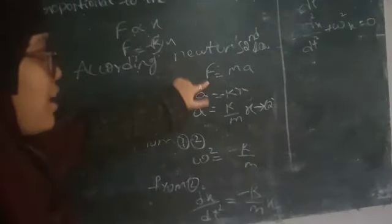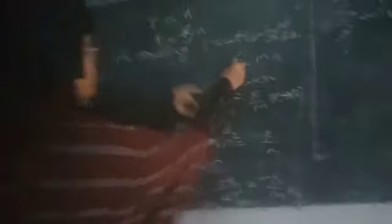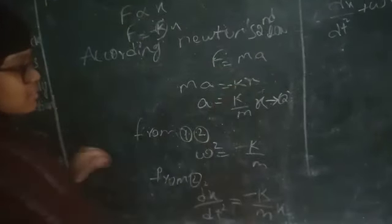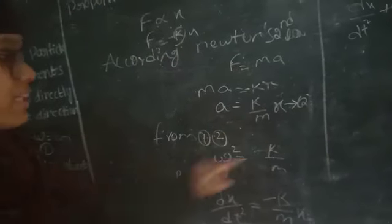According to Newton's second law, F is equal to ma. So we have ma equals minus KX. Therefore, A is equal to minus K by m times X.